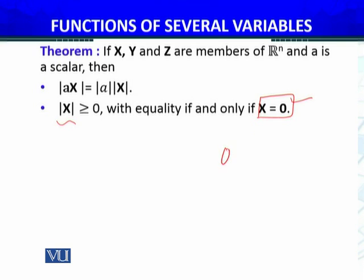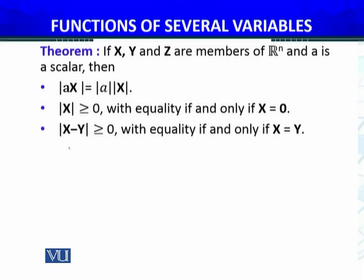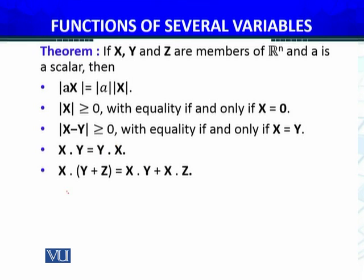This is not zero — it is the null vector, which has components 0, 0, ..., 0 (n times zero). So there is a difference between zero and the null vector of Rn. The distance between x and y — which is ‖x minus y‖ — we can define this as well, and it is greater than or equal to zero, with equality if and only if x equals y. The dot product commutes: x dot y equals y dot x. The dot product distributes over addition.